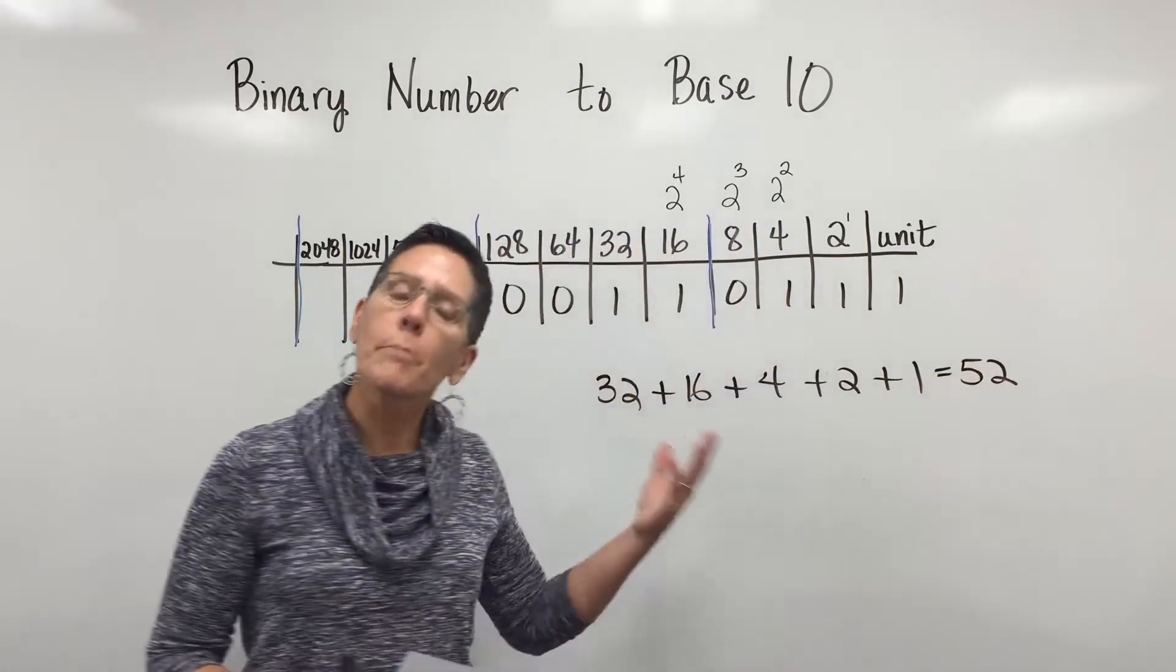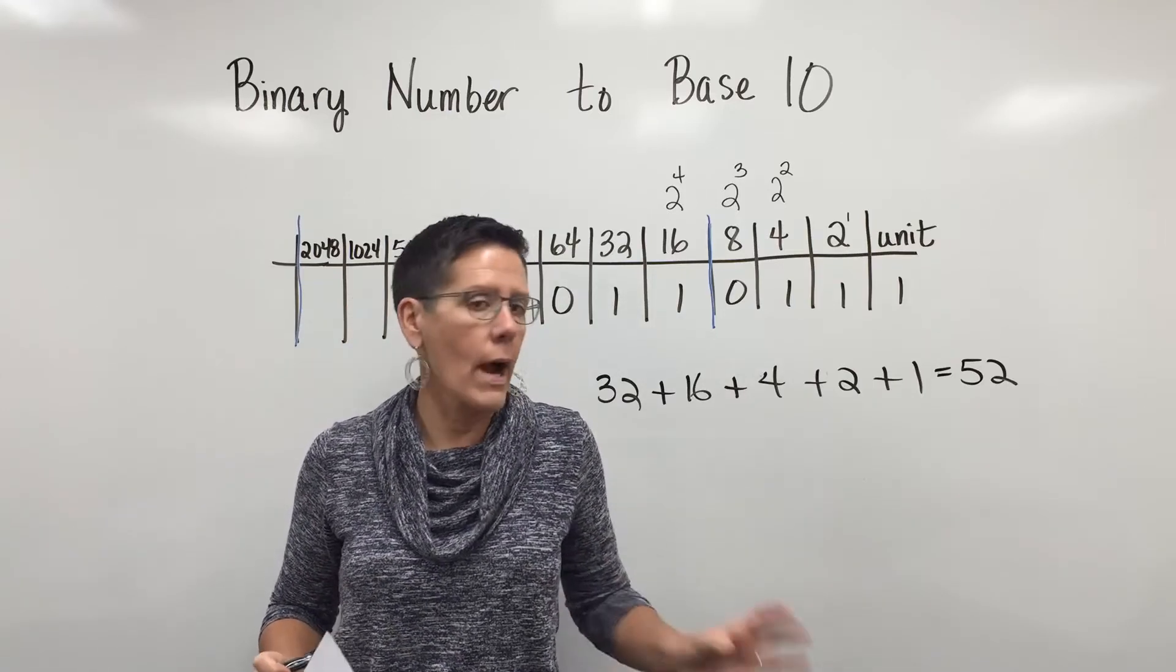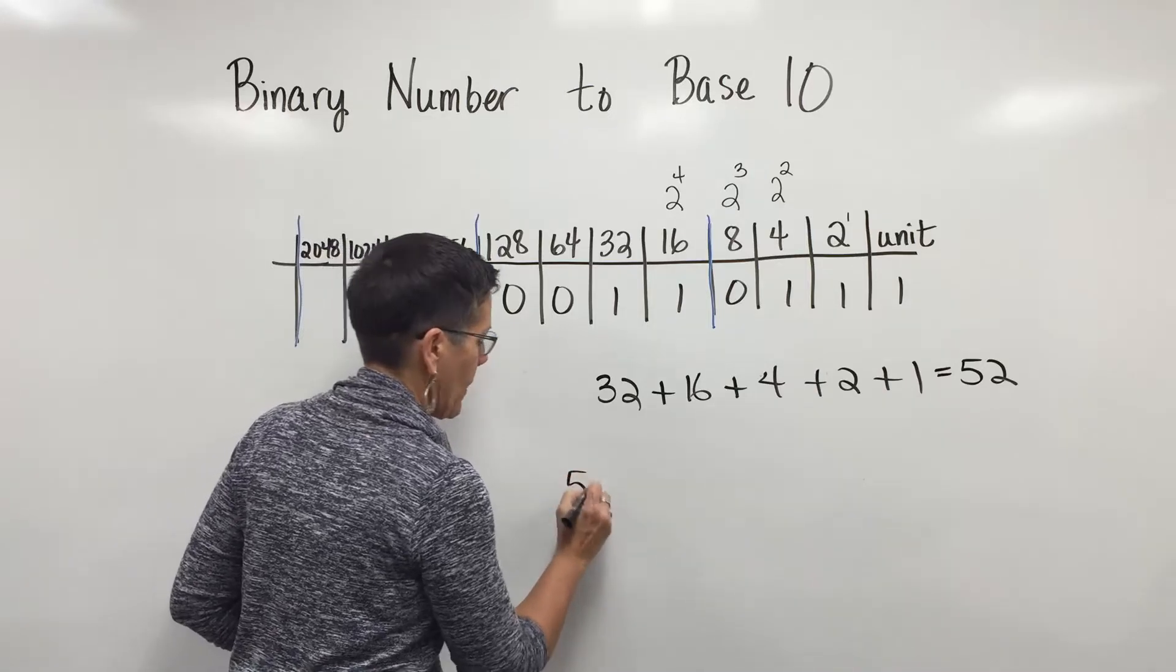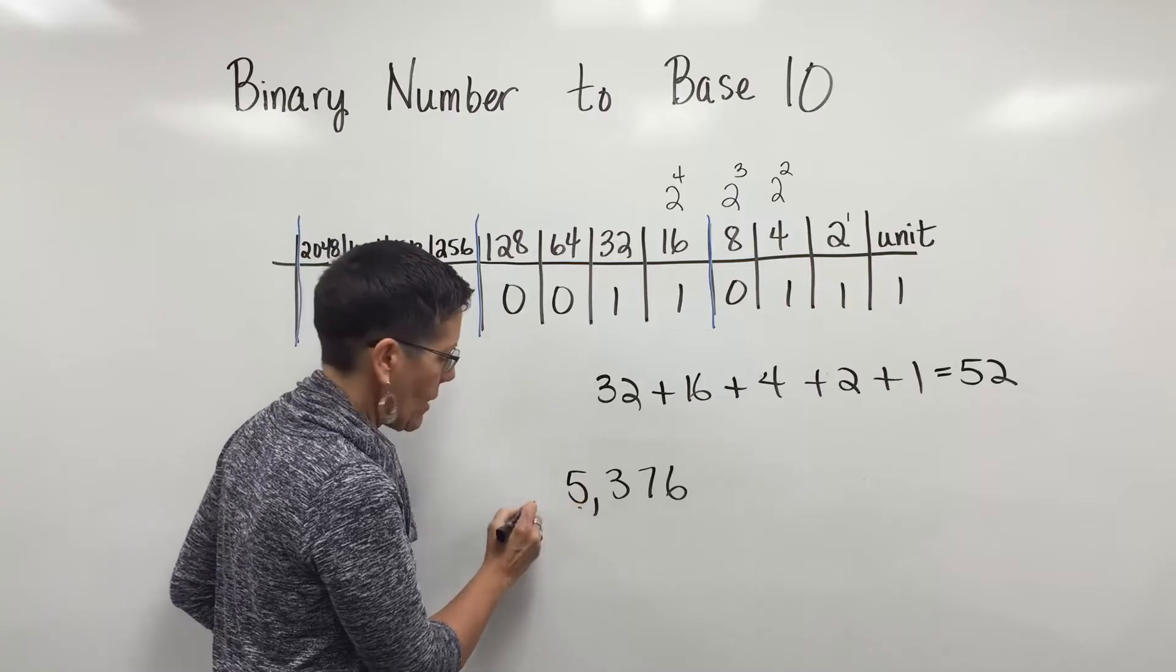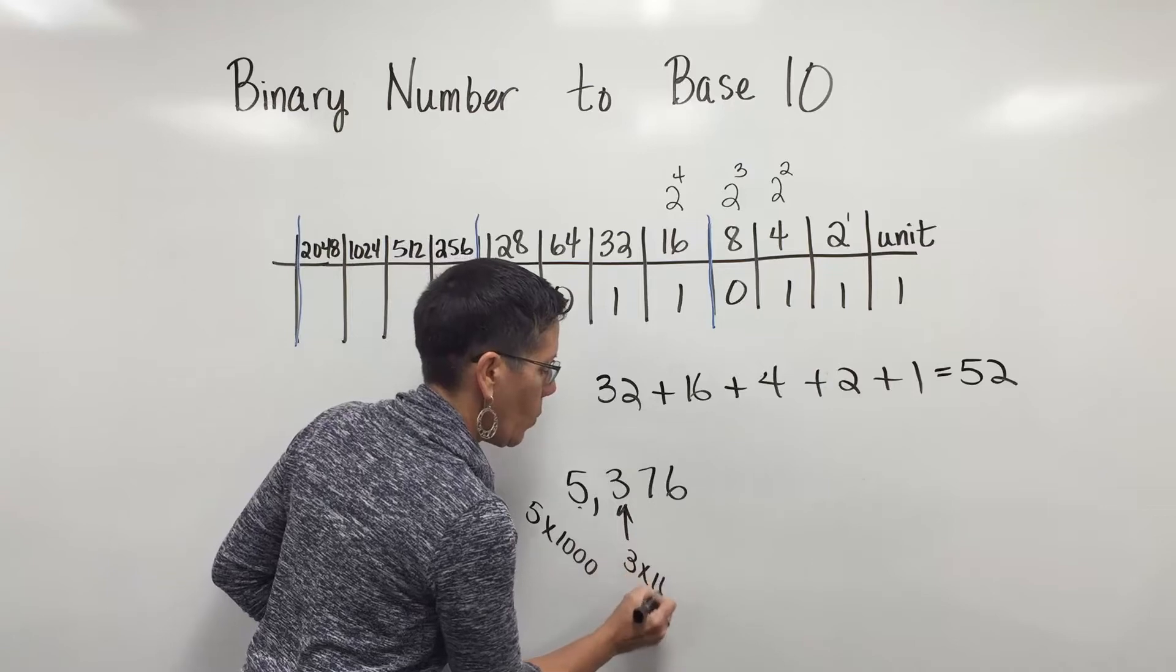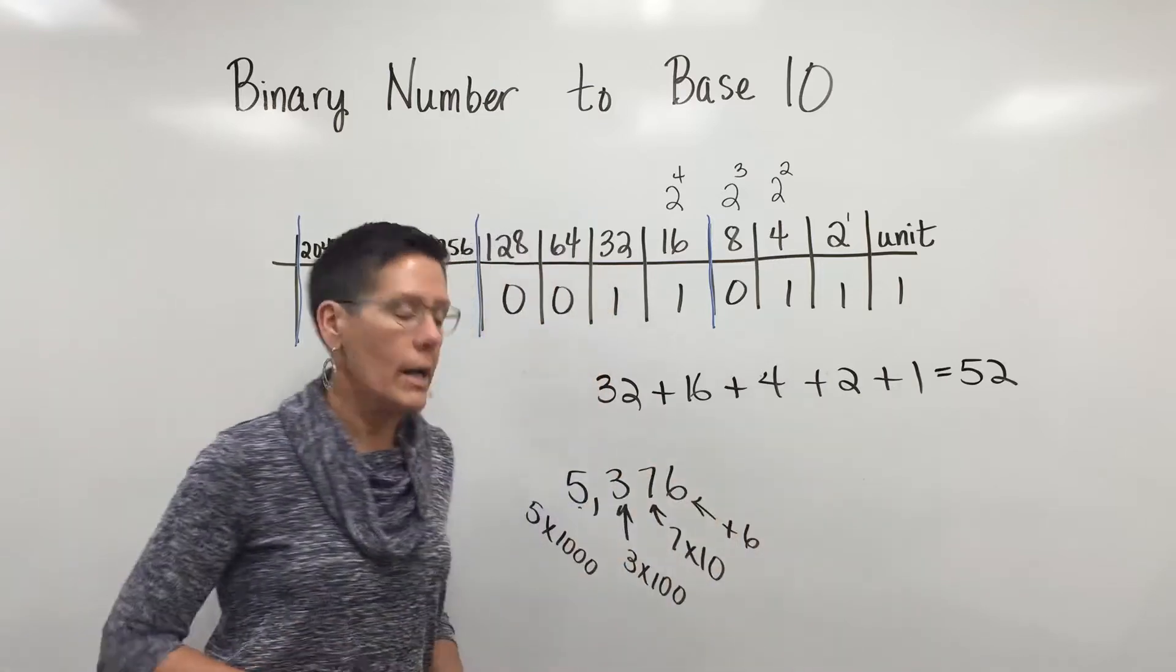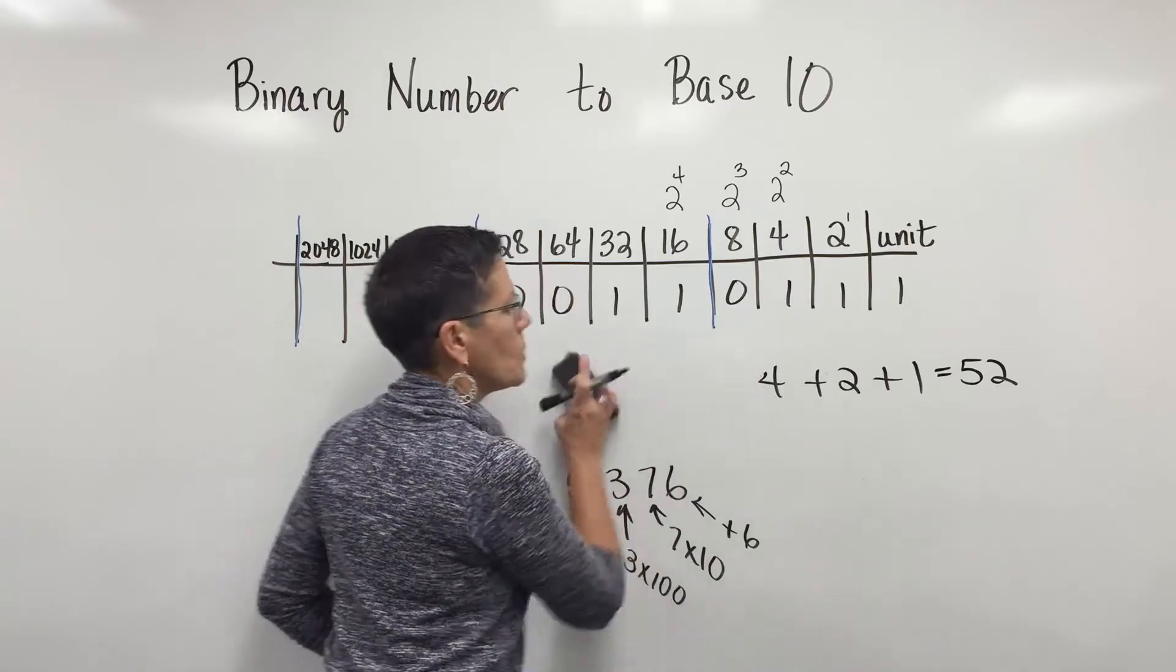To convert from binary back to base 10, I have to accumulate either the fact that I have one of them or I don't have any of them, and I take their place value. When I have a number 5376, I have 5 1000s, I have 3 100s, I have 7 10s, and I have just 6 1s to add together to get that 5376.